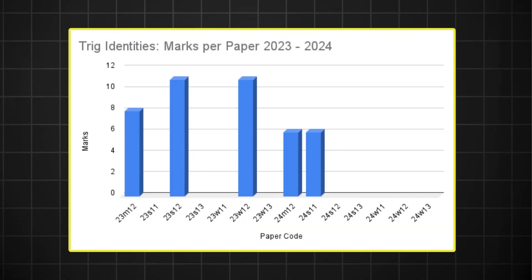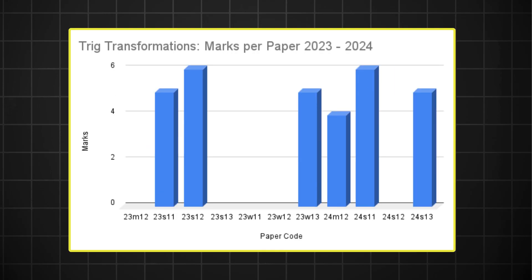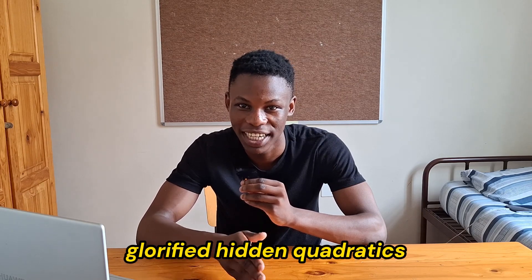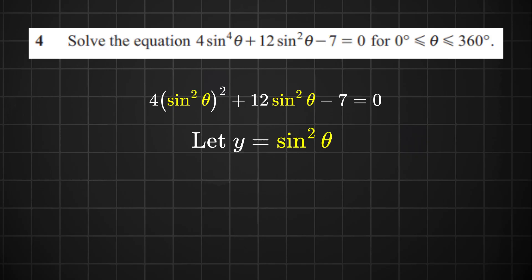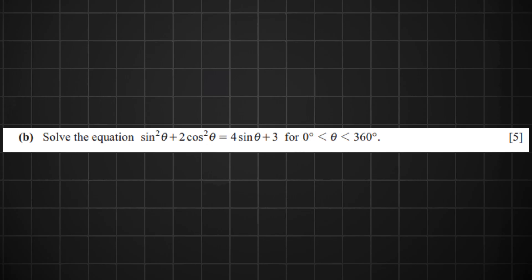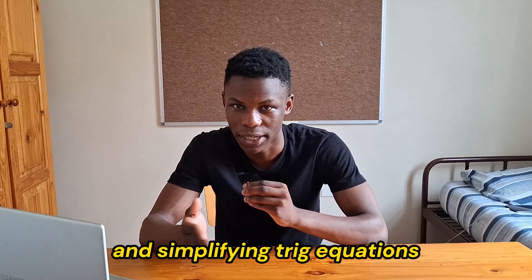Under trigonometry, the traditional trig identities have largely gone AWOL, largely due to the rise of trig hidden quadratics and trig transformations. Trig hidden quadratics are, for the most part, glorified hidden quadratics. For example, in paper 13 October-November 2024, notice how we can rewrite sin⁴θ as (sin²θ)², and using a substitution, this is in fact a quadratic. In some cases they might give a seemingly normal trig equation, so make sure you're comfortable with manipulating and simplifying trig equations.